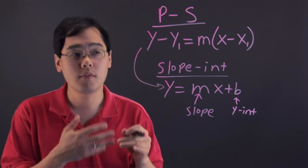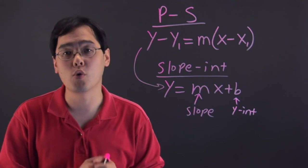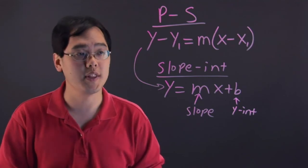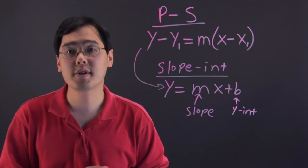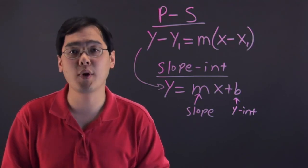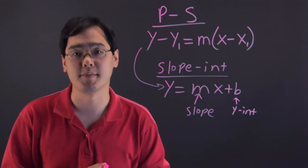So the two are very useful, but one is more useful than the other, as you can see. I'm Jimmy Chang, and that is point-slope versus slope-intercept.